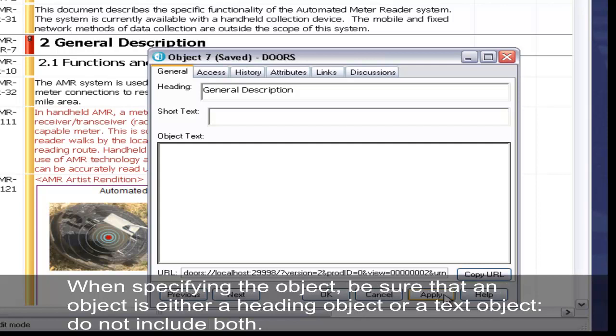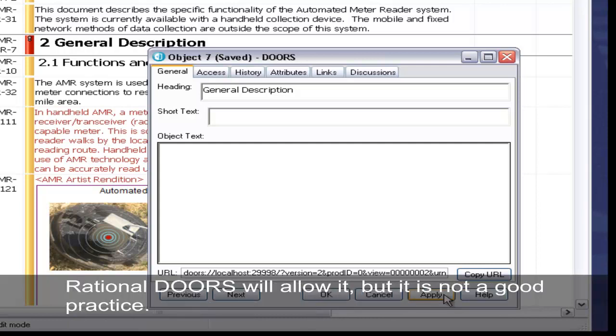When specifying the object, be sure that an object is either a heading object or a text object. Do not include both. Rational doors will allow it, but it is not a good practice.